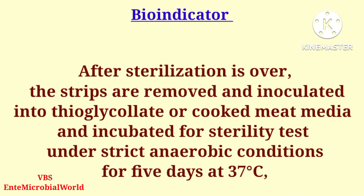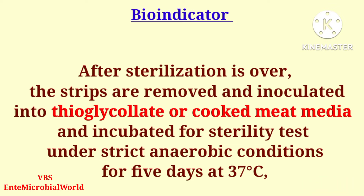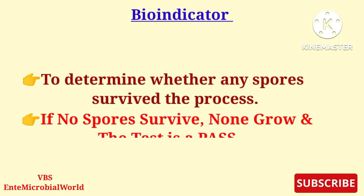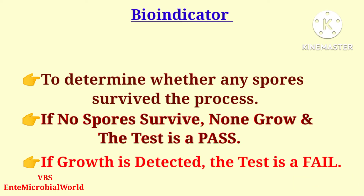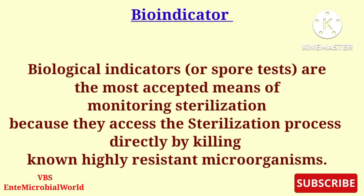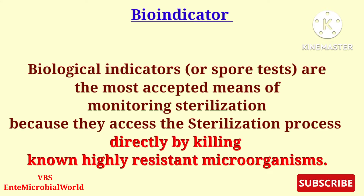After sterilization, the strips are removed and inoculated into thioglycolate or cooked meat media, and incubated for a sterility test under strict anaerobic conditions for five days at 37 degrees Celsius. If no spores survive, none grow and the test is a pass. If growth is detected, the test is a fail. Biological indicators are the most accepted means of monitoring sterilization because they directly assess the process by killing known highly resistant microorganisms.